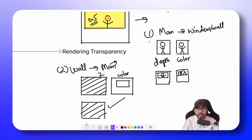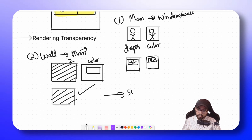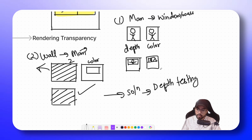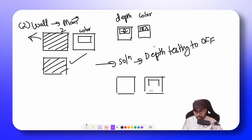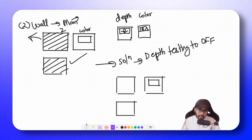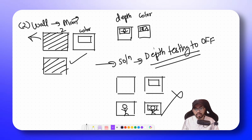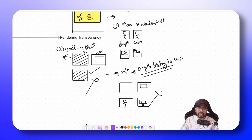When rendering any transparent object we cannot use the Z-buffer algorithm directly. One potential solution is: while writing the transparent object to the depth buffer, we switch depth testing off. If we switch off depth testing, nothing is written to the depth buffer for the wall. We write to the color buffer as usual. Then while rendering the man, the man's depth values are written to the depth buffer and the man appears in front on the color buffer. But this fails the first case — if depth testing is off, opaque objects behind transparent ones would incorrectly appear in front. So switching depth testing on fails case 2, and switching it off fails case 1. What do we do?